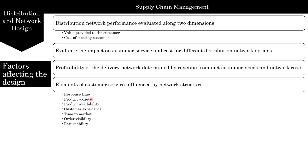Firms that target customers who tolerate long response times require only a few locations that may be far from the customer. These companies can focus on increasing the capacity of each location. In contrast, firms that target customers who value short response times need to locate facilities close to them, so these firms have many facilities each with low capacity, which decreases the response time but increases the number of facilities required in the network.